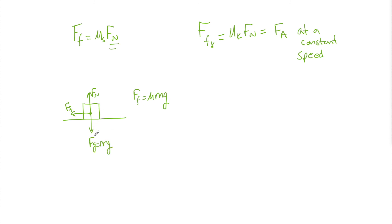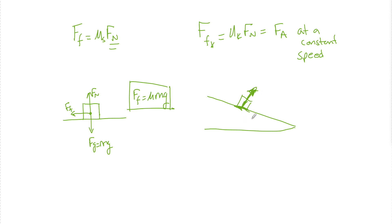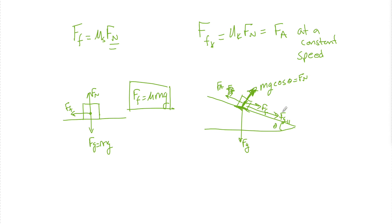When on an incline, the force of the normal is still perpendicular to the surface, but F_N is not equal to mg — it equals a component of mg, which is mg times cosine of theta, where theta is the angle of the incline. If the box is sliding down, the force of friction points up the incline. If the box is being pulled up by an applied force, friction points down the incline alongside the component of gravity parallel to the surface, which is mg times sine of theta. Friction is going to be used all over the course.